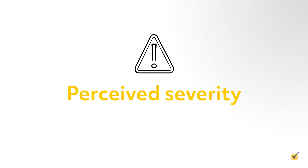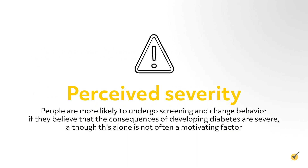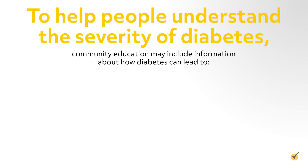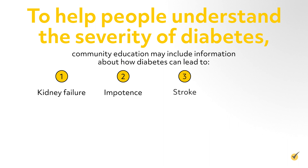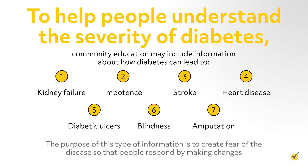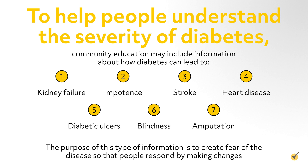The next thing to consider is perceived severity. People are more likely to undergo screening and change behavior if they believe that the consequences of developing diabetes are severe, although this alone is not often a motivating factor. To help people understand the severity of diabetes, community education may include information about how diabetes can lead to kidney failure, impotence, stroke, heart disease, diabetic ulcers, blindness, and amputation. In a sense, the purpose of this type of information is to create fear of the disease so that people respond by making changes.